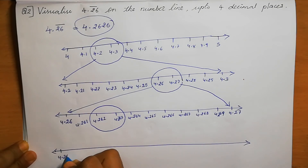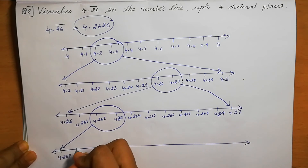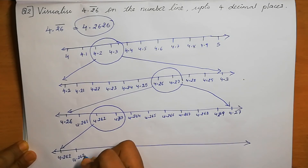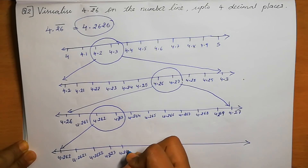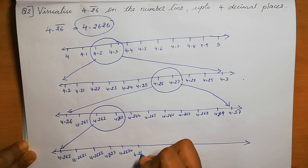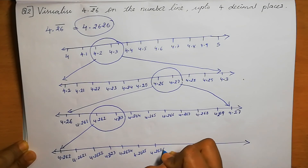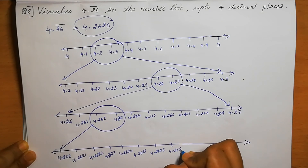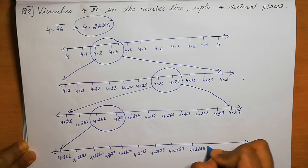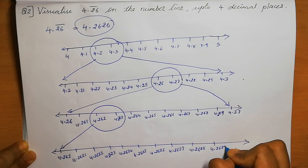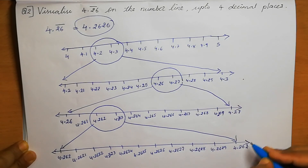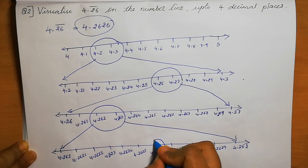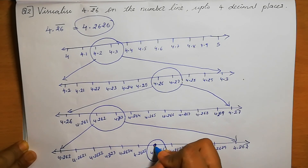Between 4.262 and 4.263: 4.262, then 4.2621, 4.2622, 4.2623, 4.2624, 4.2625, 4.2626, 4.2627, 4.2628, 4.2629, then 4.263. So in between these we exactly get 4.2626 on the number line.